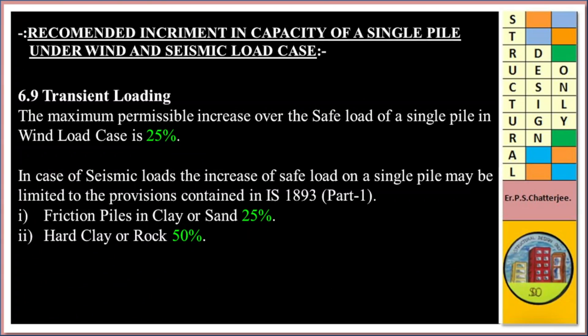Recommended increments in capacity of a single pile under wind and seismic load cases. Transient loading: The maximum permissible increase over the safe load of a single pile in a wind load case is 25%. In case of seismic load, the increase of safe load on a single pile may be limited per provisions in IS 1893 Part 1. For friction pile in clay or sand it is 25%; for hard clay or rock it will be 50%.